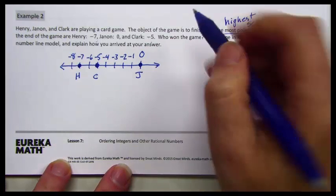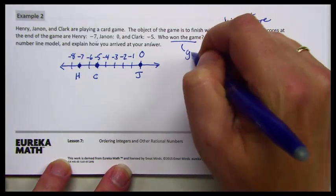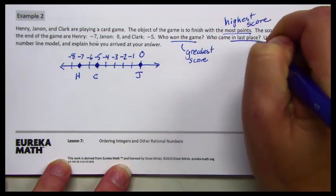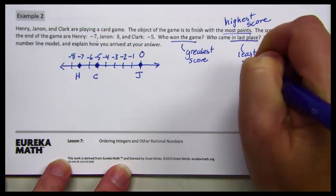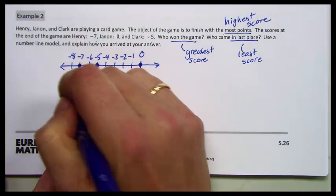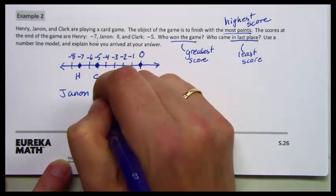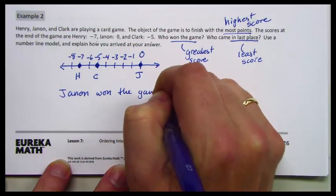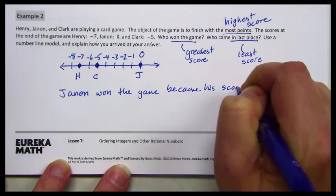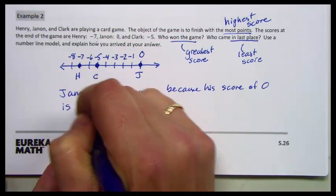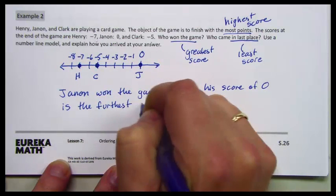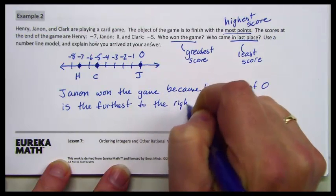If I want to know who won the game, that is the greatest score. Who came in last place, that is the least score or the smallest score. So Janan won the game because his score of 0 is the furthest to the right on the number line.